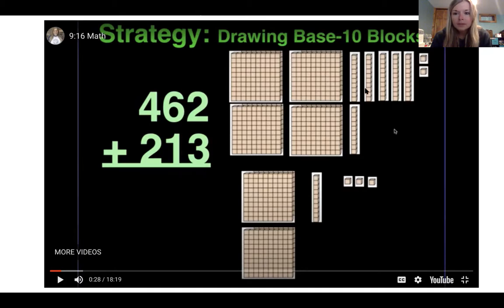One, two, three, four, five, six, seven tens. So far we have 670. 1, 2, 3, 4, 5. 675 is my answer.